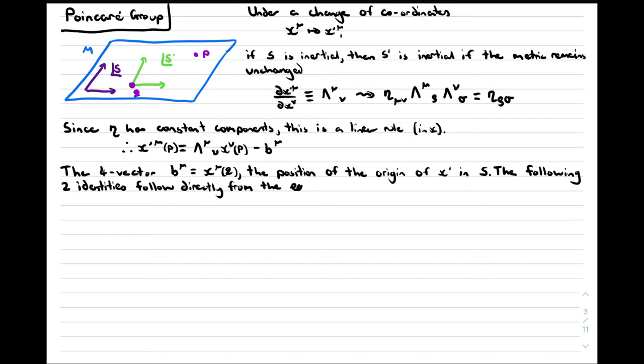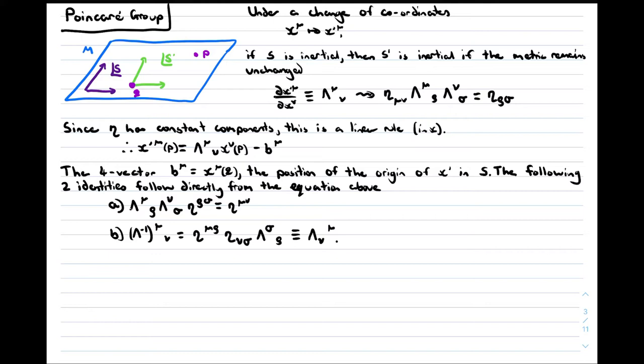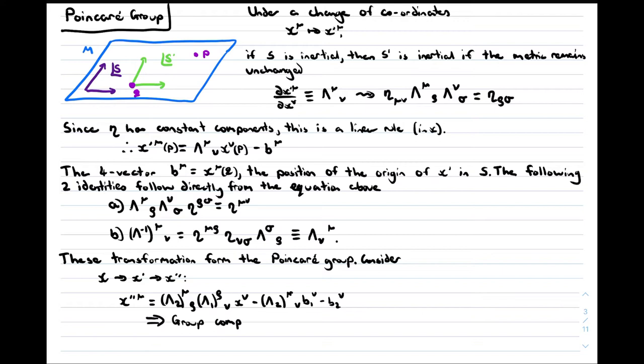The following two identities follow directly from the equation above: an almost identical relation but with the inverse metric, and an expression for the inverse of λ. There are two popular conventions for how to write this inverse. I will stick to the convention on the far right because it leads to less cumbersome notation down the line. These transformations form the Poincaré group. We can find the group composition law by considering two successive transformations from X to X prime and then from X prime to X double prime. Another useful formula is the expression for the inverse of a transformation.